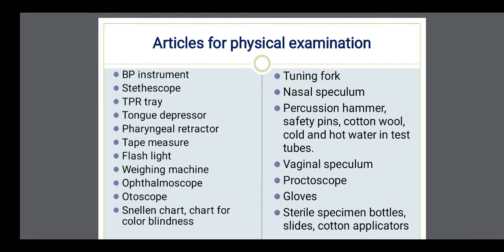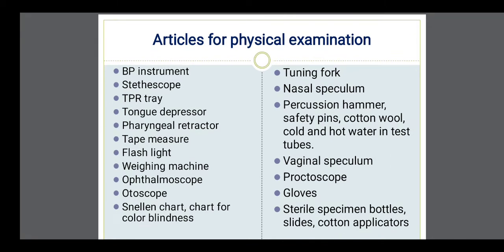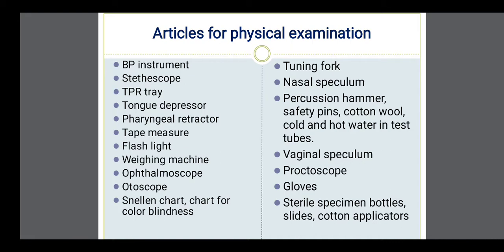The ophthalmoscope is used to see the retina, and the otoscope is used to examine the ear up to the eardrum. Snellen's chart is used for examining vision. Then a chart for color blindness. Then a tuning fork is also required. Nasal speculum. Then percussion hammer, vaginal speculum or Sims speculum. Proctoscope is used to examine the rectum. Gloves are sometimes required. Sterile specimen bottles if you want to collect specimens during the examination for further diagnosis. Photon applicators are used for testing sensation of touch.